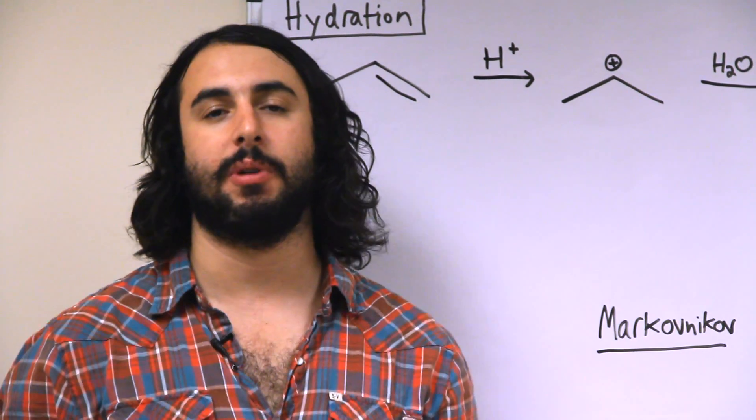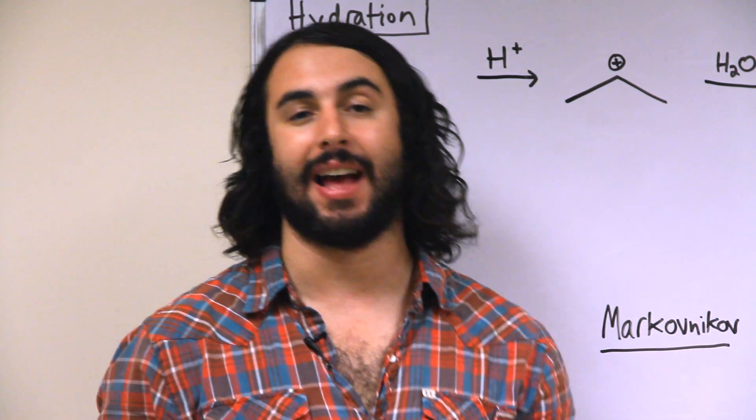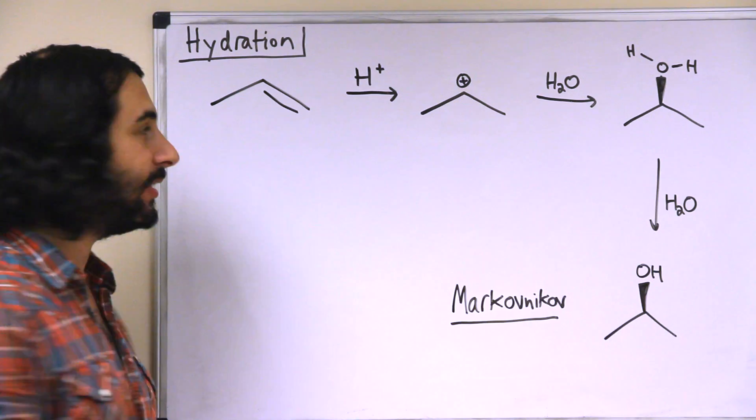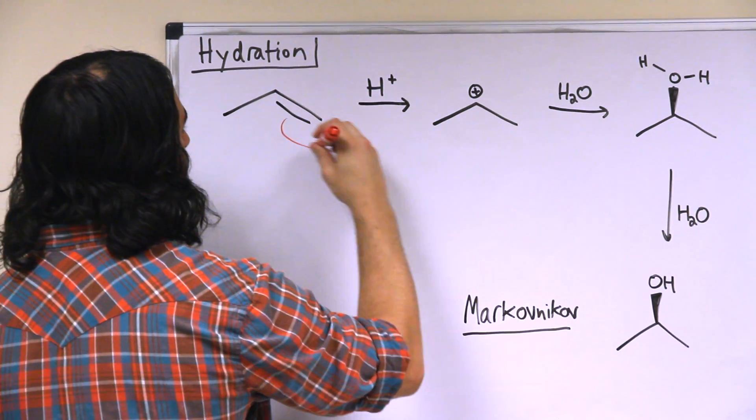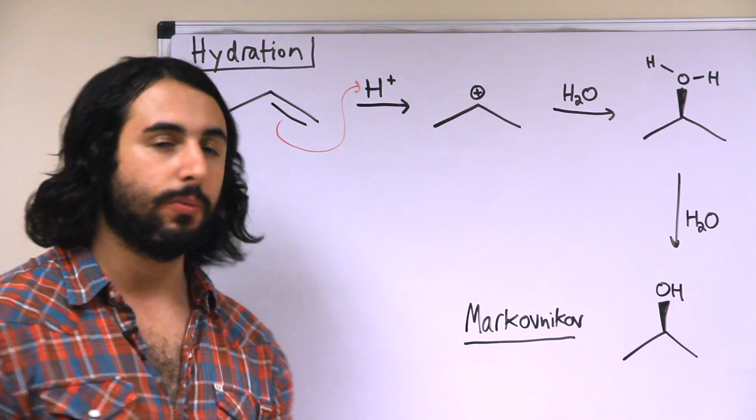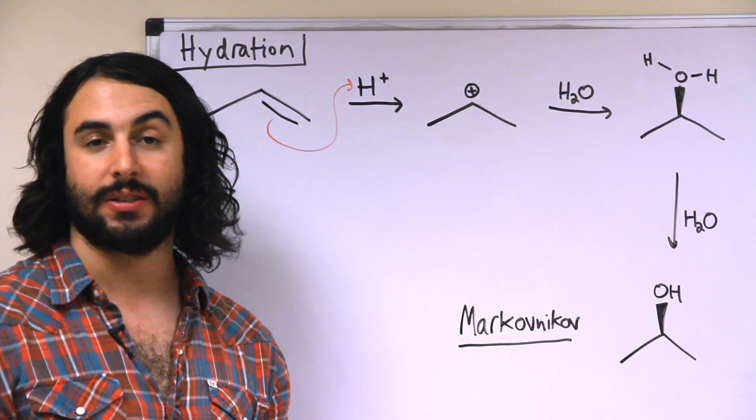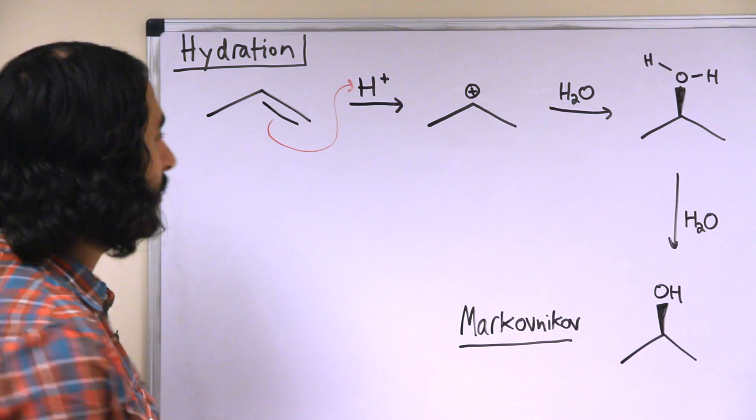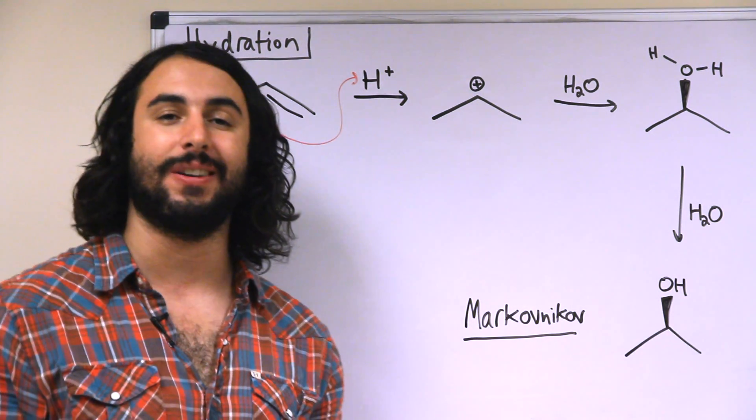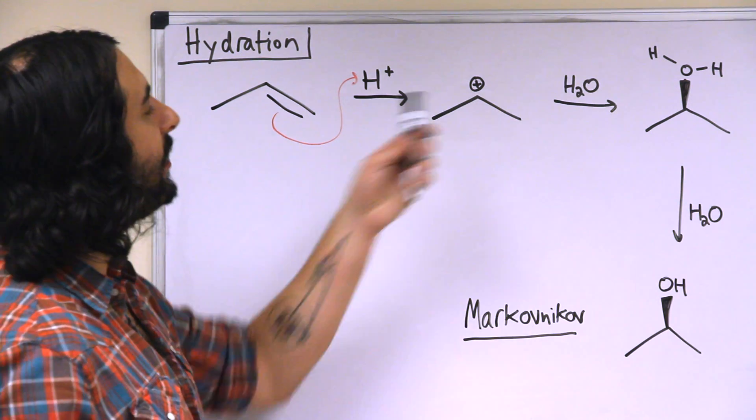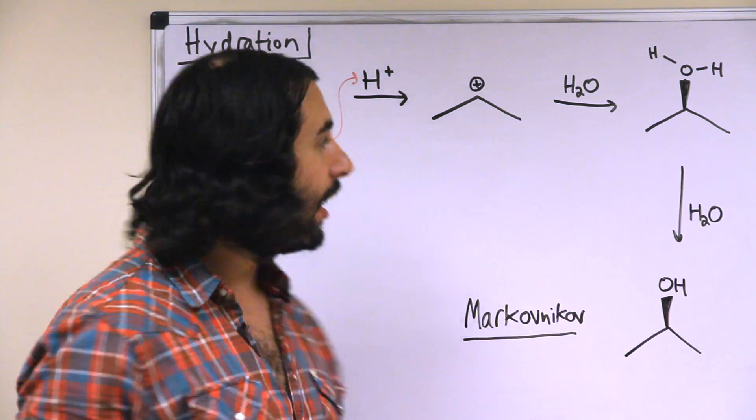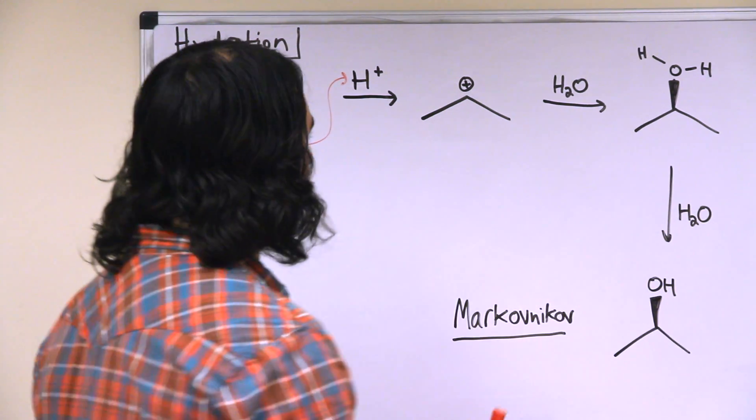The next addition reaction we want to take a look at is acid-catalyzed hydration. Once again we're going to see that the pi bond behaves as the nucleophile and the proton as the electrophile. So this is the same first step basically as the hydrohalogenation. We're seeing that we once again have two options for where the carbocation could end up and it will exclusively end up on the secondary carbon because it's more stable.